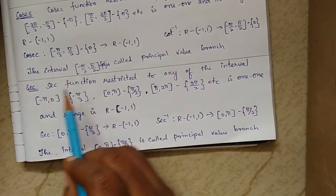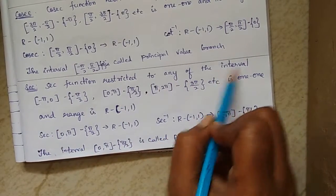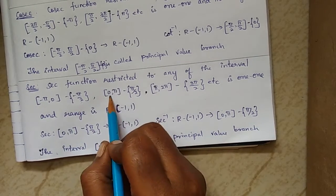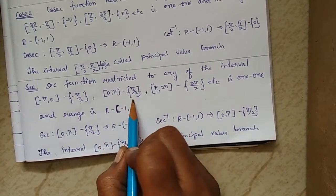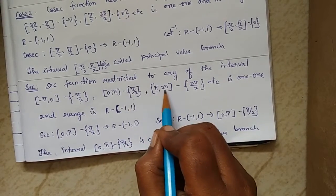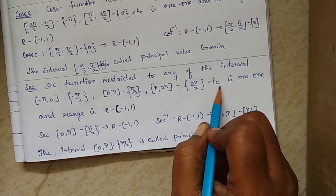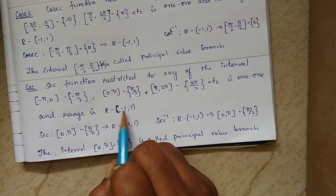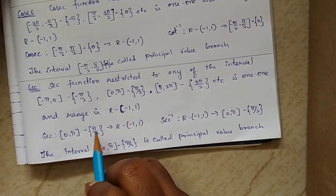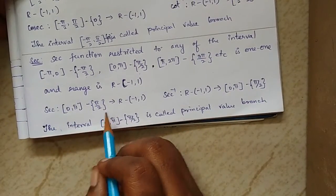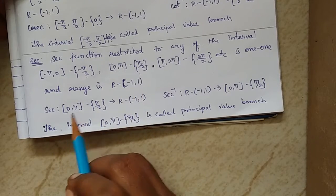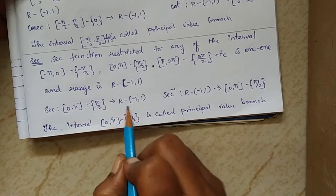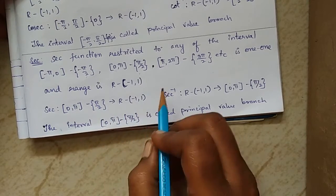For the secant function restricted to any of the intervals such as [-π, 0] minus {-π/2}, or [0, π] minus {π/2}, or [π, 2π] minus {3π/2}, the range is R minus the open interval (-1, 1). So for the interval [0, π] minus {π/2}, the domain is [0, π] minus {π/2} and the range is R minus (-1, 1).